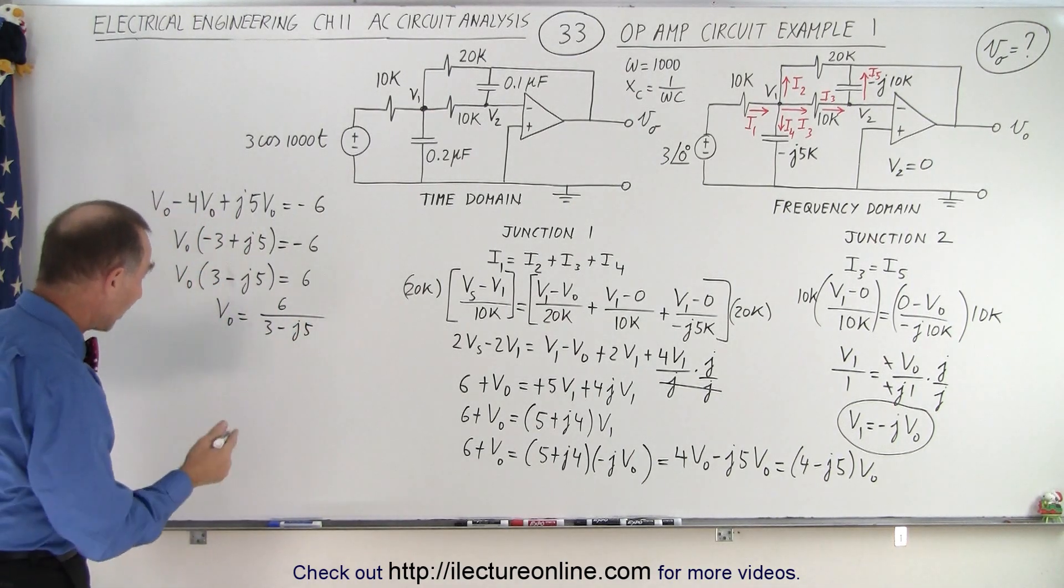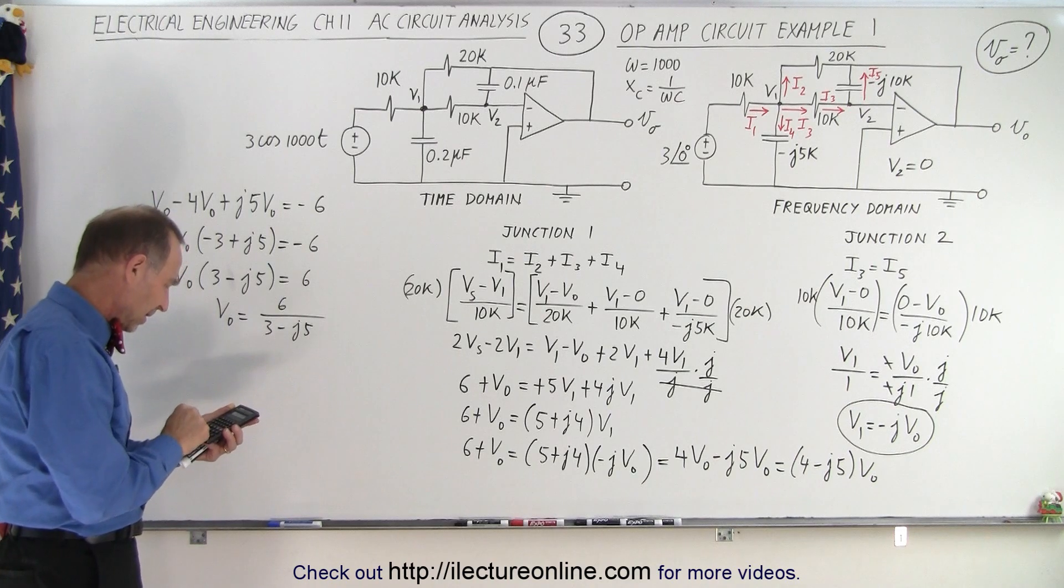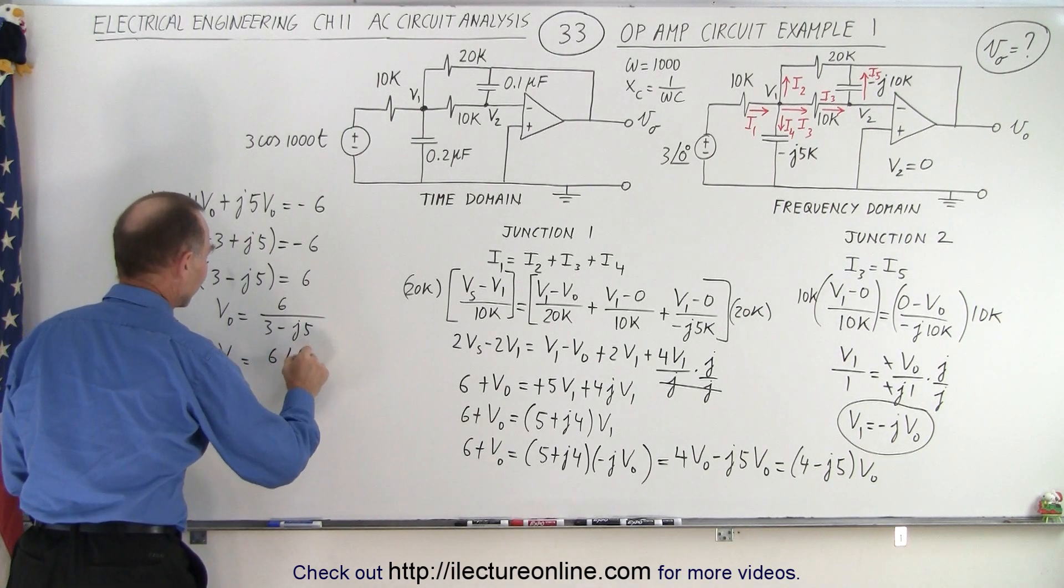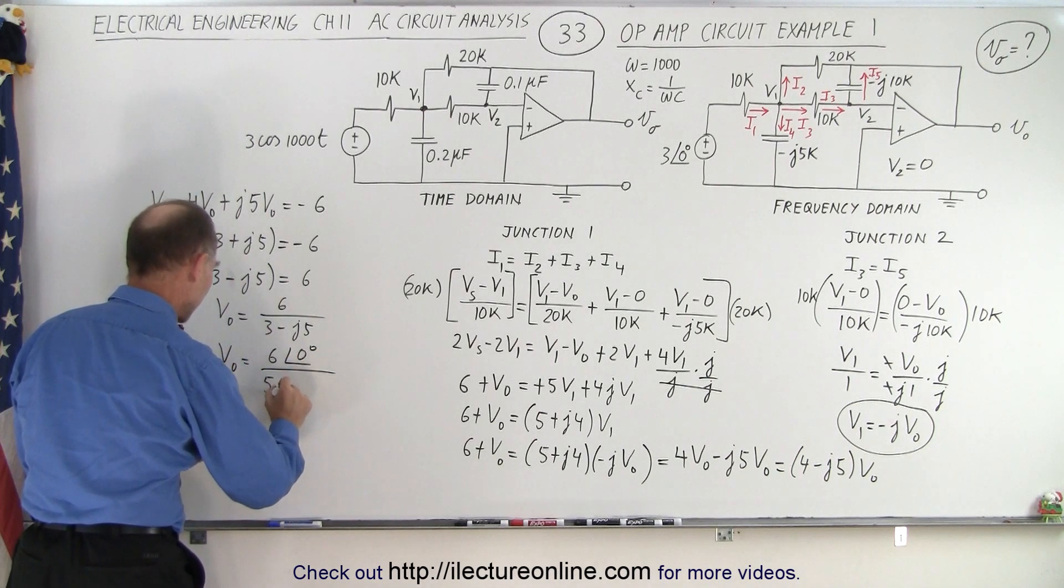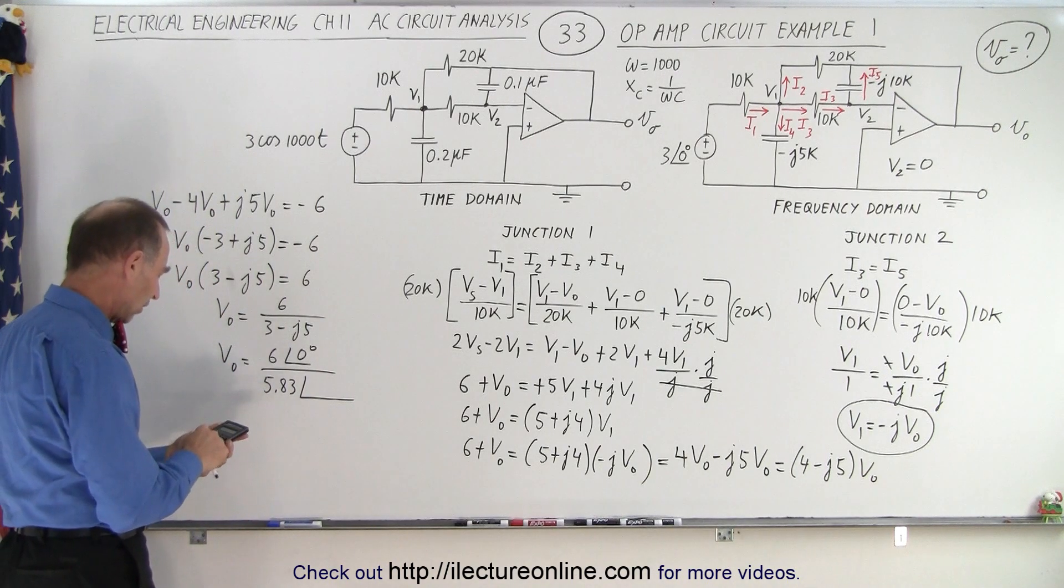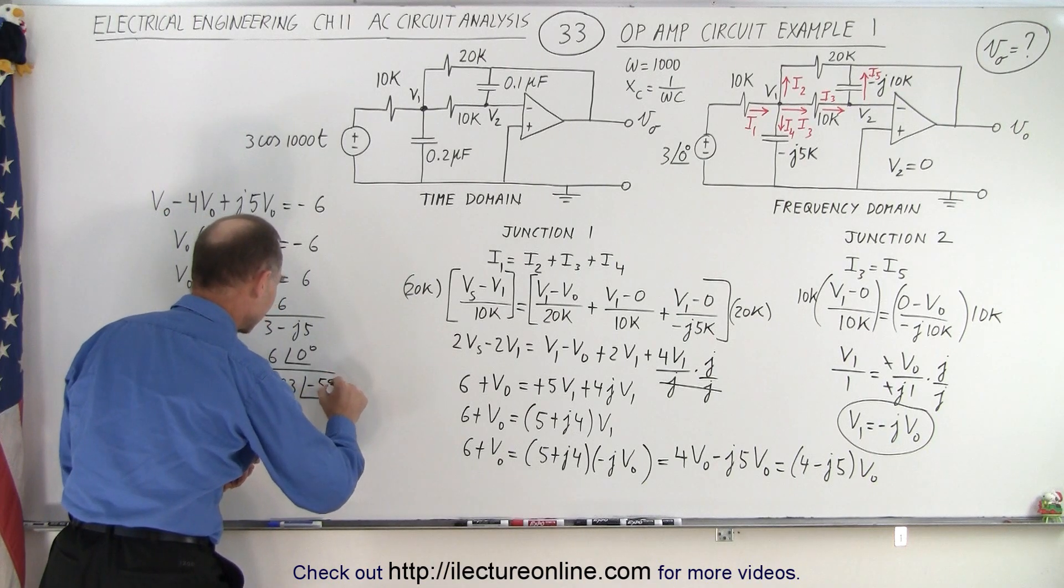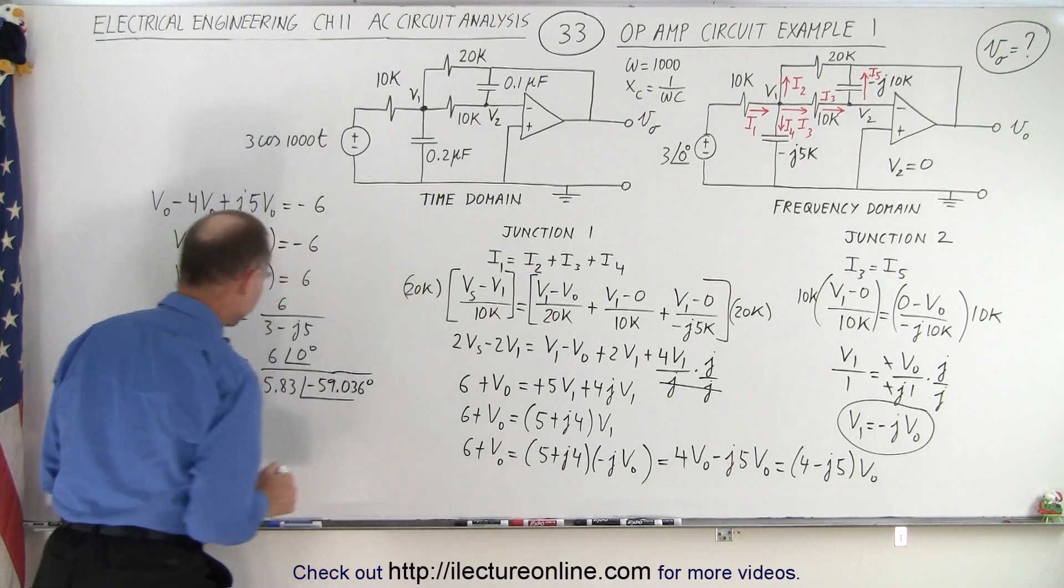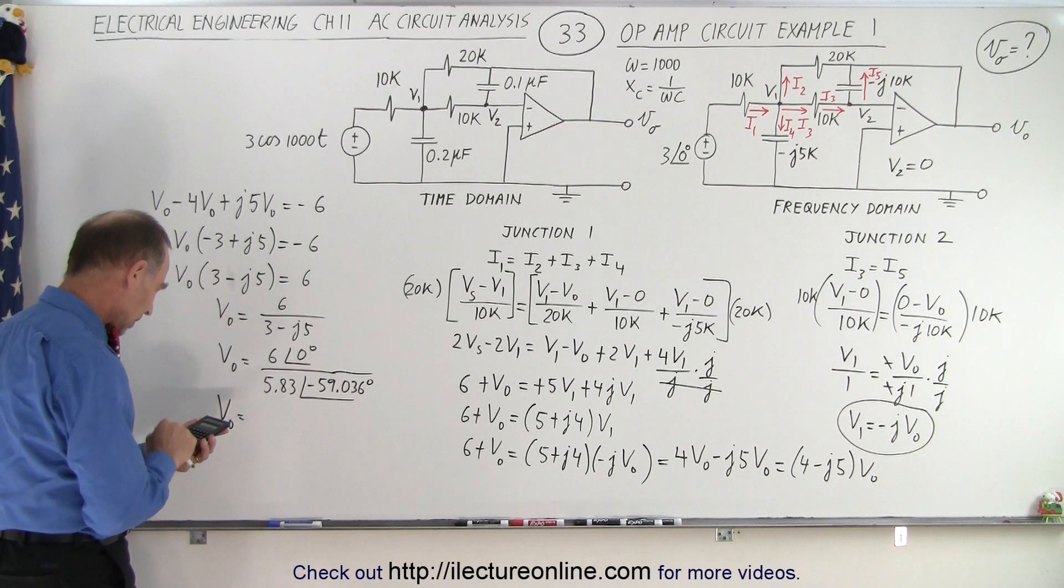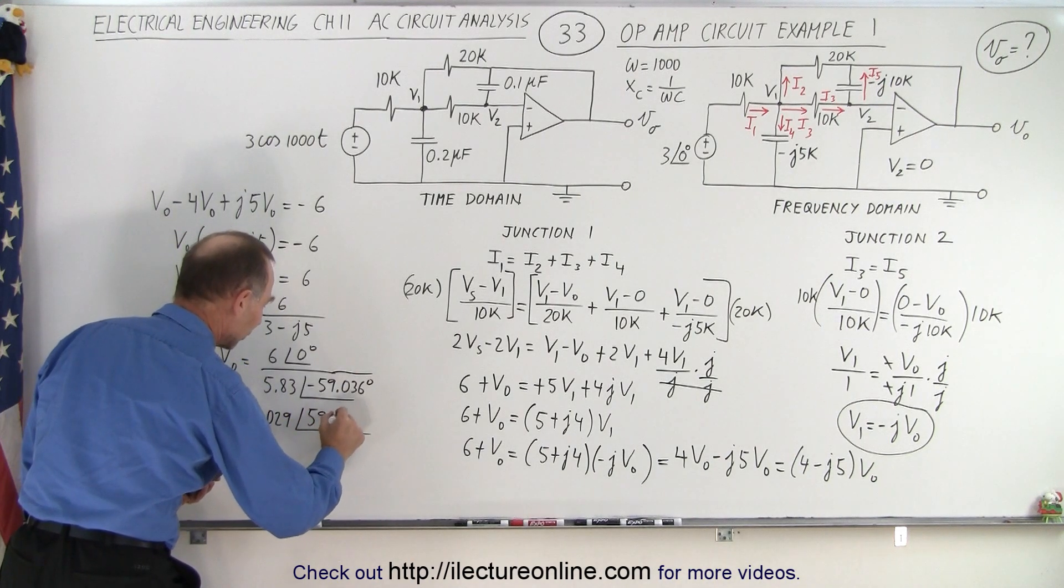And of course, now I have to change that into the magnitude phase angle format. So I get 25 plus 9, take the square root, 5.83. So we have V0 equals 6 with a phase angle of 0 degrees divided by 5.83 with a phase angle of 5 divided by 3. Take the inverse tangent, that's a negative 59.036 degrees. So now, V0 is equal to, when I make the division, I get 6 divided by 5.83, which is 1.029, with a phase angle of a positive 59.036 degrees.